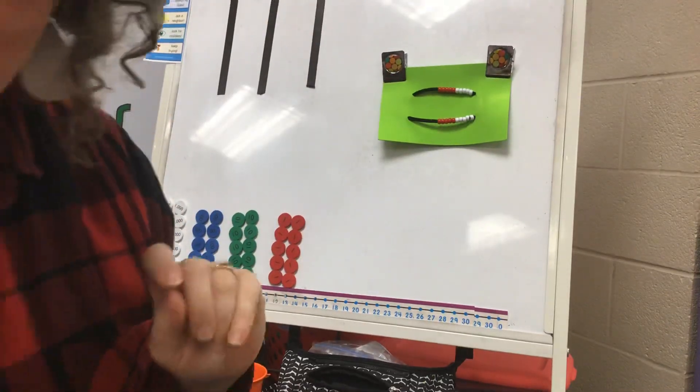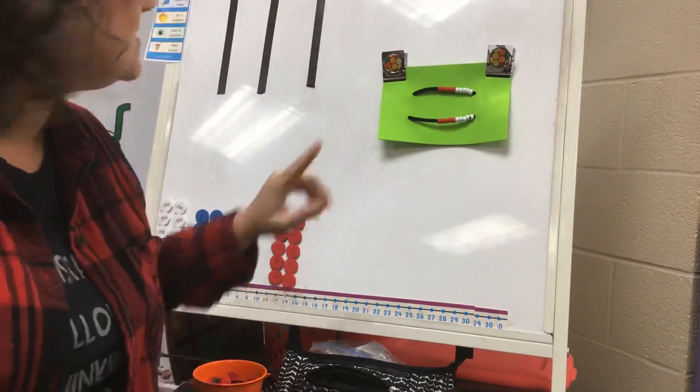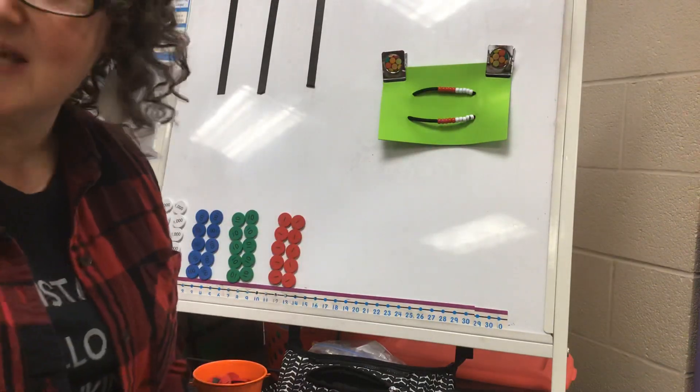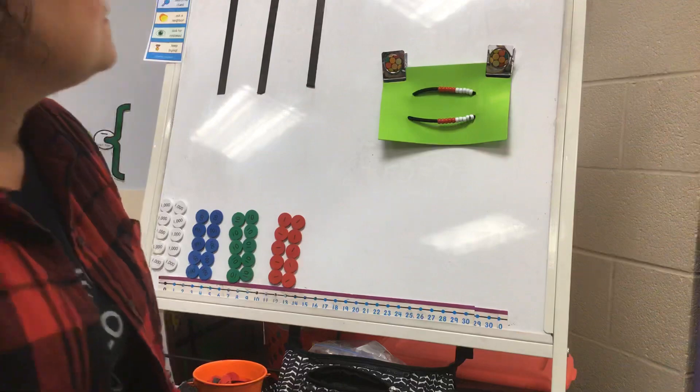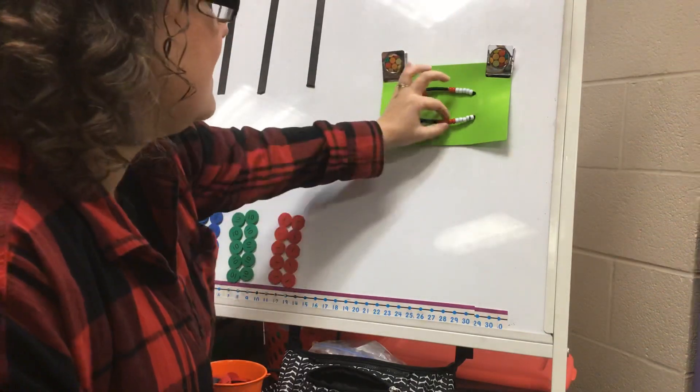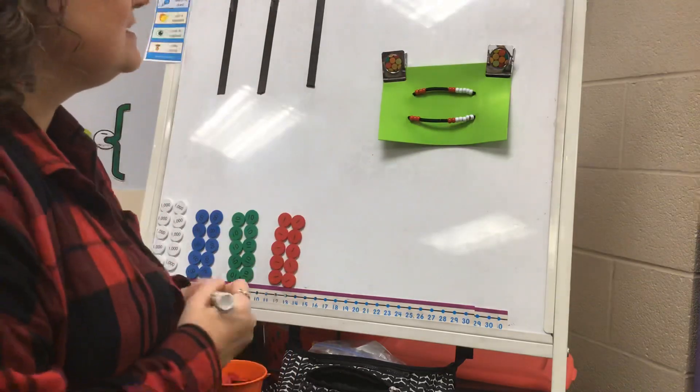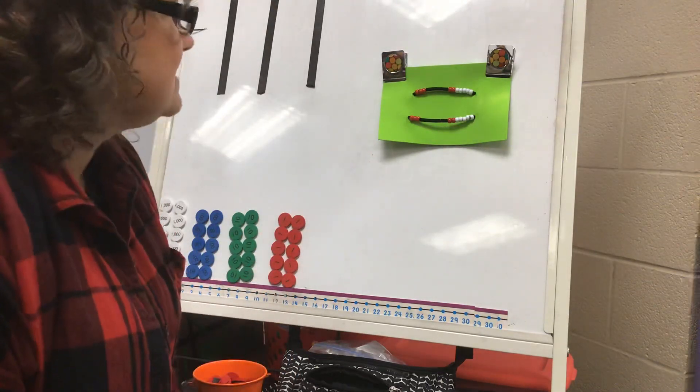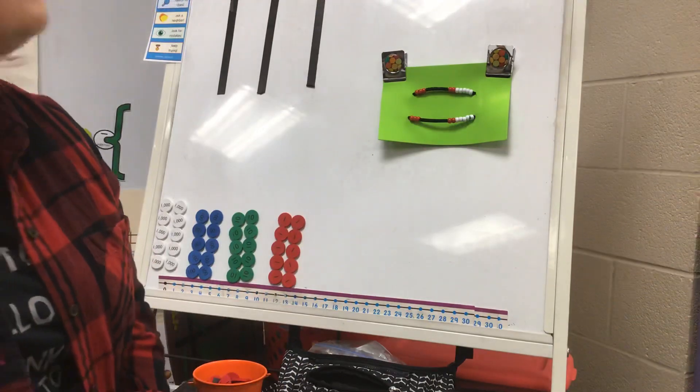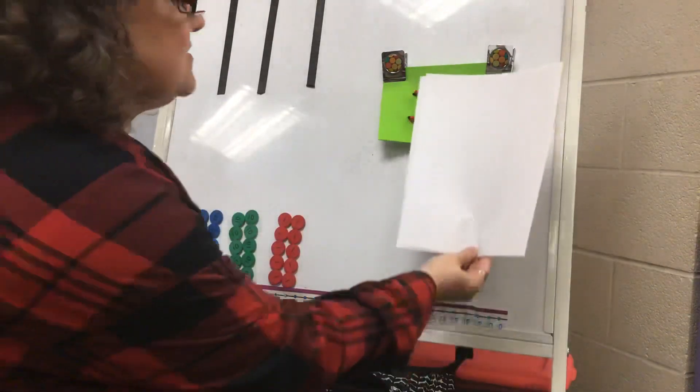So today we are going to use our Rekenrek to do doubles and near doubles. For example, if I showed three on the top and three on the bottom, does anybody know that doubles fact? How many would three and three be? Remember, we're only looking at the beads that I've slid over—we're not looking at the beads on that side.